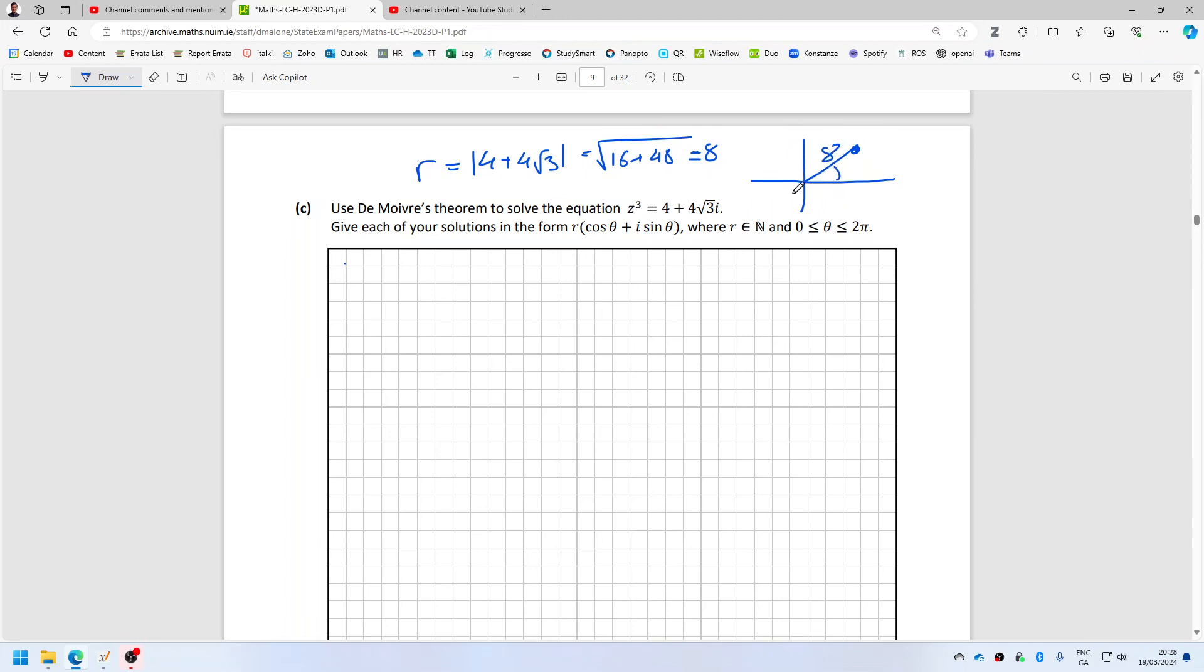And then the angle here is tan inverse of 4 root 3 over 4, so that's pi over 3. So in general polar form, z cubed...